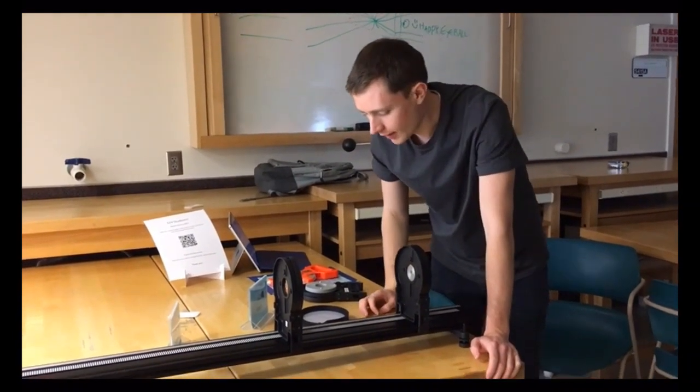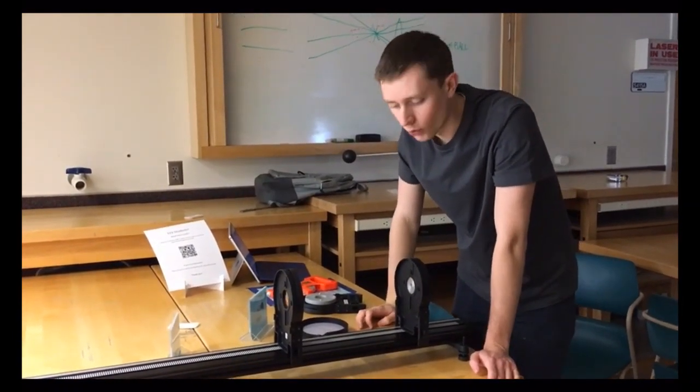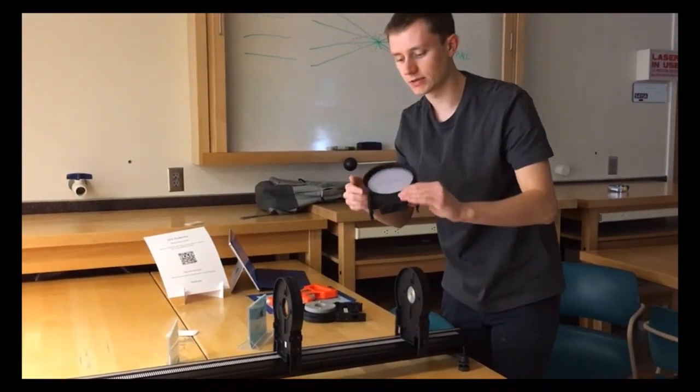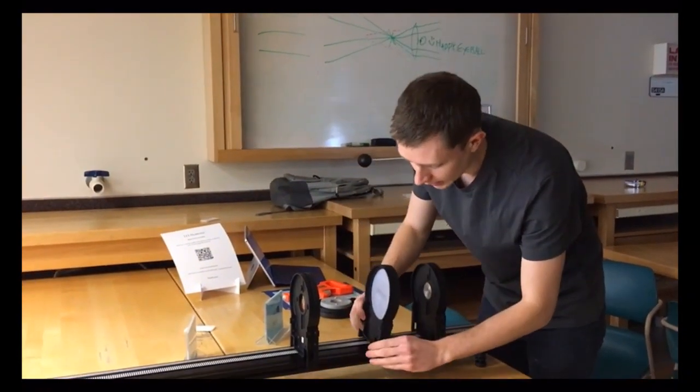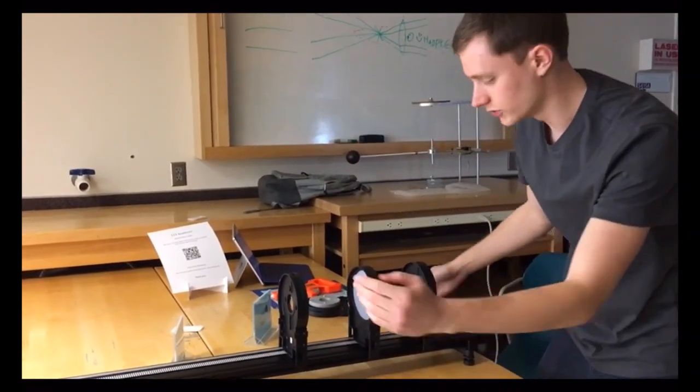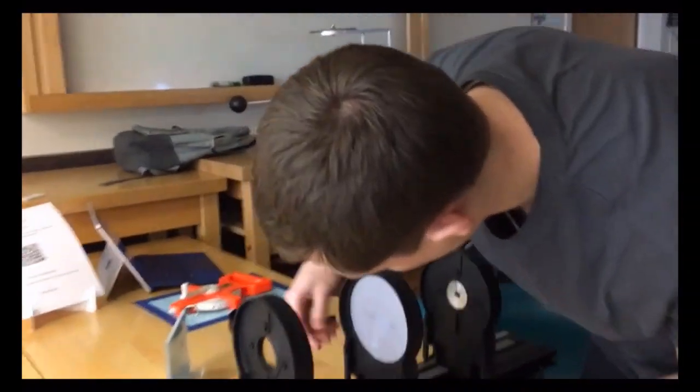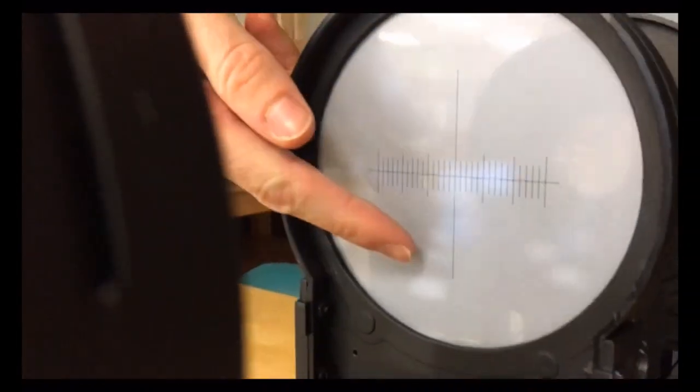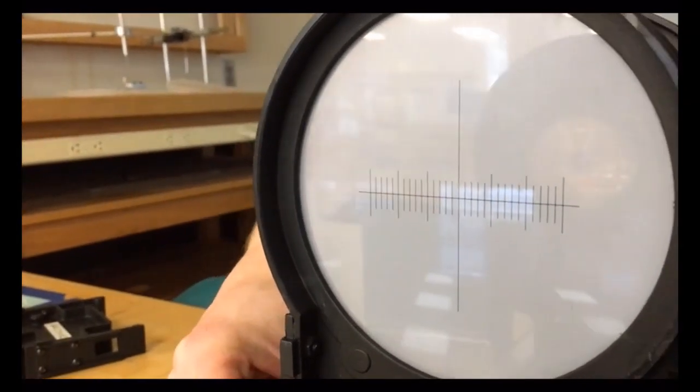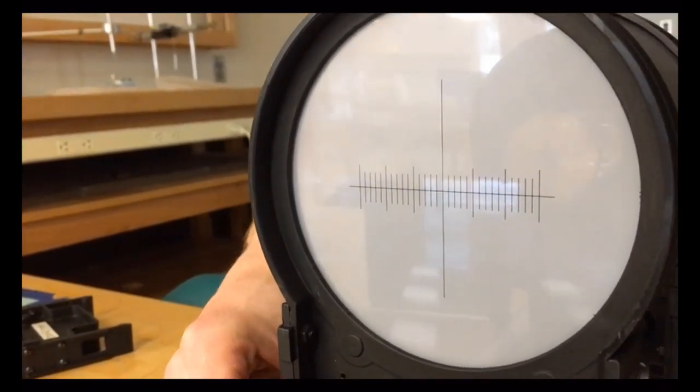And so the first part of the lab, we need to find the focal point of the objective lens here. So how we're going to do this is we have just this white screen, and we're going to place it on our optical bench here. And if you zoom in here, we should be able to see the lights from the ceiling, as well as the window, which is right where our object is located.